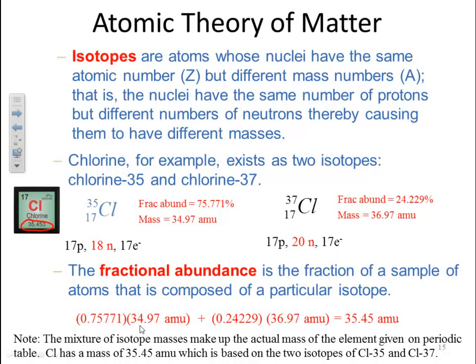Note, the mixture of isotope masses make up the actual mass of the element given on the periodic table. Chlorine has a mass of 35.45 AMUs, which is based on the two isotopes of chlorine-35 and chlorine-37. The actual AMU symbol unit we'll talk about later on.